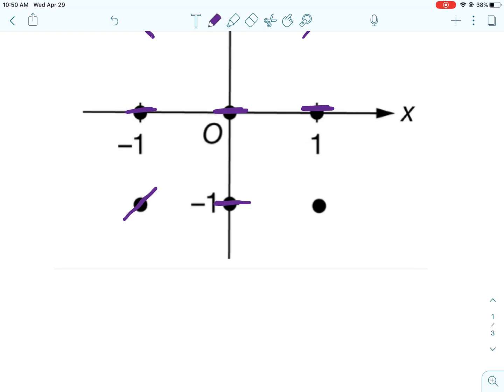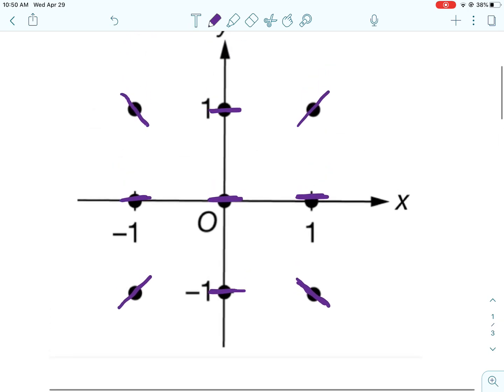And then for the third quadrant, the x and the y are both negative 1. So negative 1 times negative 1 cubed is going to be a positive 1, because negative 1 cubed is still negative 1.